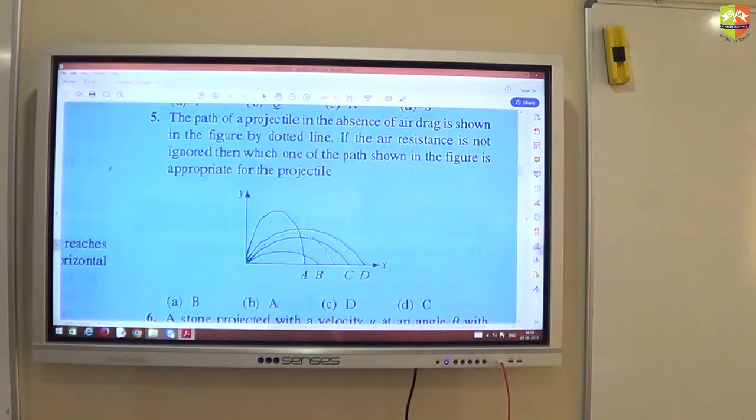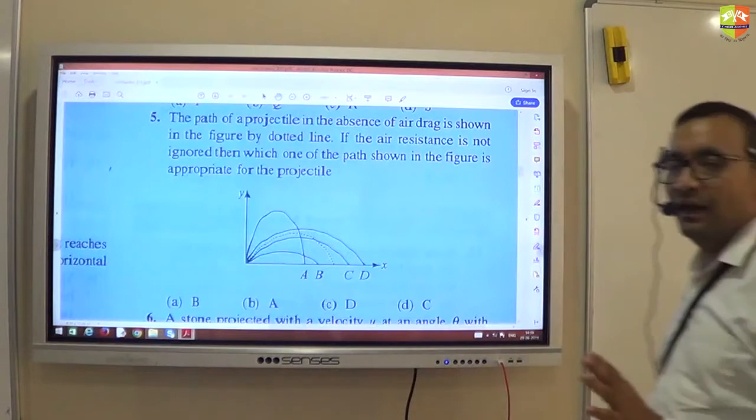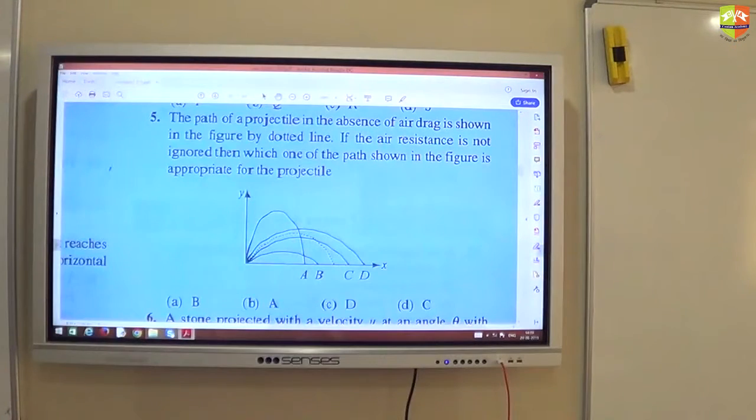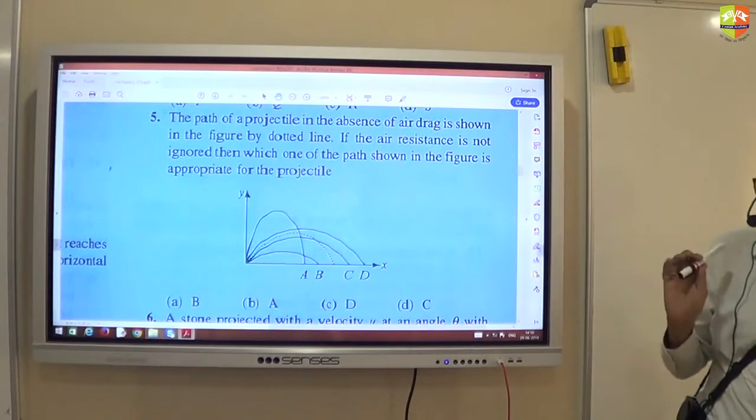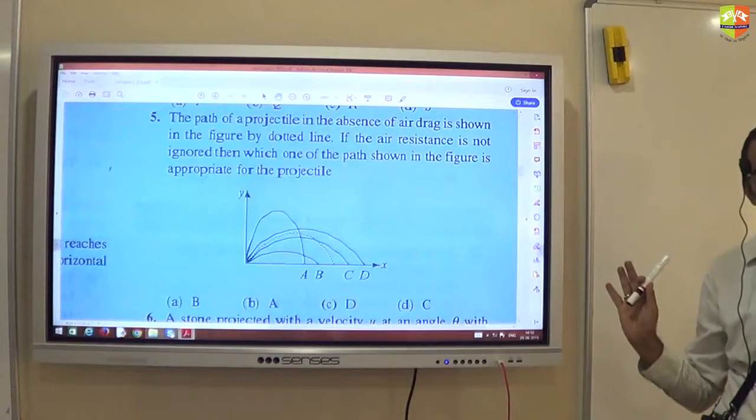So they are not asking you to exactly tell the path, you have to estimate. The velocity - air resistance will oppose the velocity. The velocity is in this direction, it will apply force in the opposite direction of velocity. This is what air resistance will do.